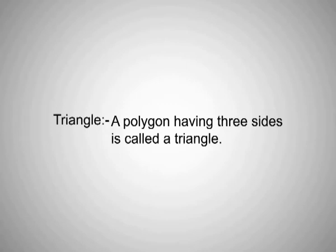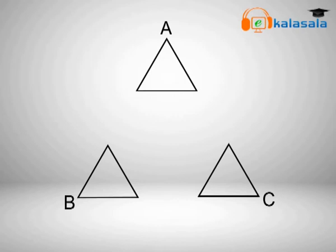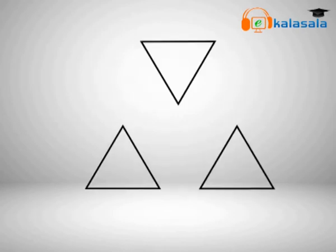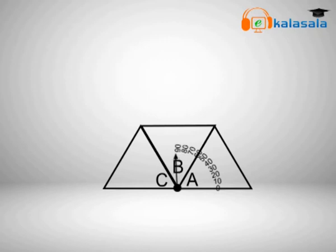A triangle is a polygon with three sides. Let us do an activity: take a triangle ABC and cut all three corners of the triangle as shown in the figure. Arrange them as shown, and if we observe carefully, the sum of all three angles is 180 degrees.